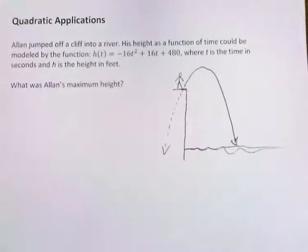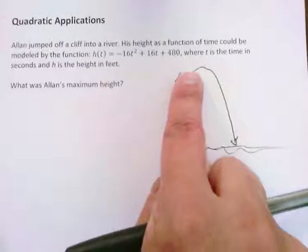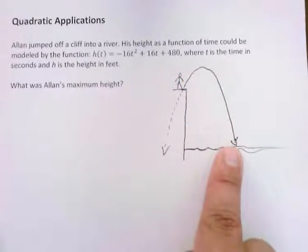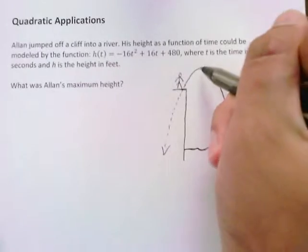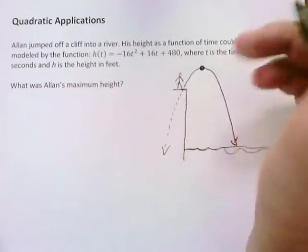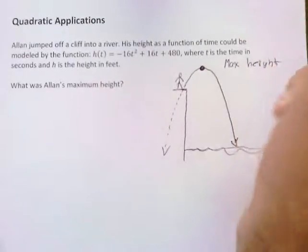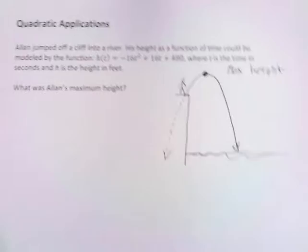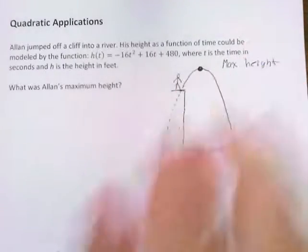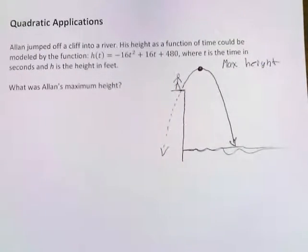So what they want to know about is what was Allan's maximum height. So looking at this picture, it's a lot easier to point at and pick out where does this maximum height happen. Well, when you jump, you're going to go up a little bit and then gravity takes over, brings you back down to the water. So this point right here, this should be the max height. So we want to know all about this point.